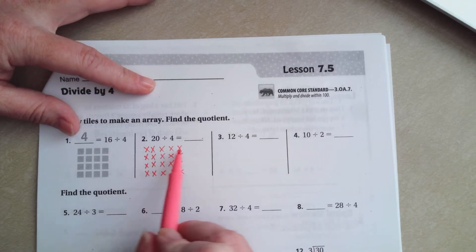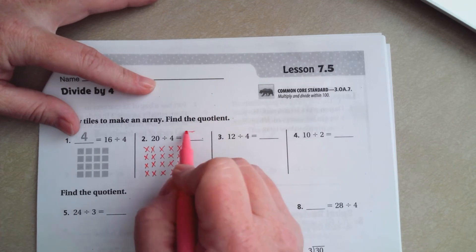So now I have my 4, how many rows? Well that's 1, 2, 3, 4, 5.